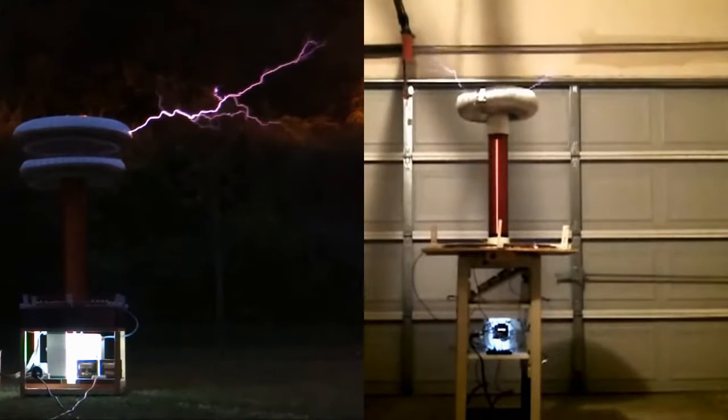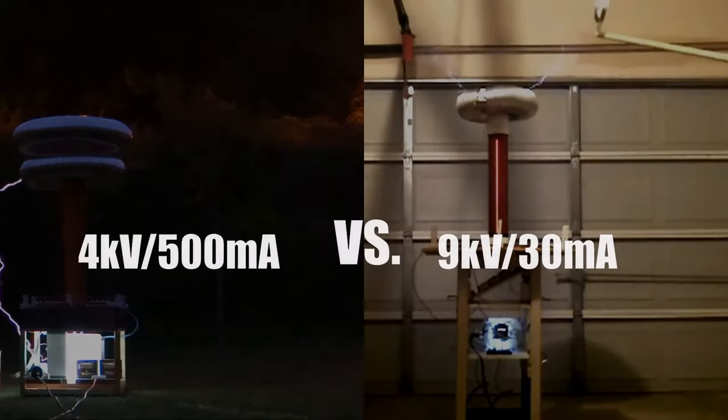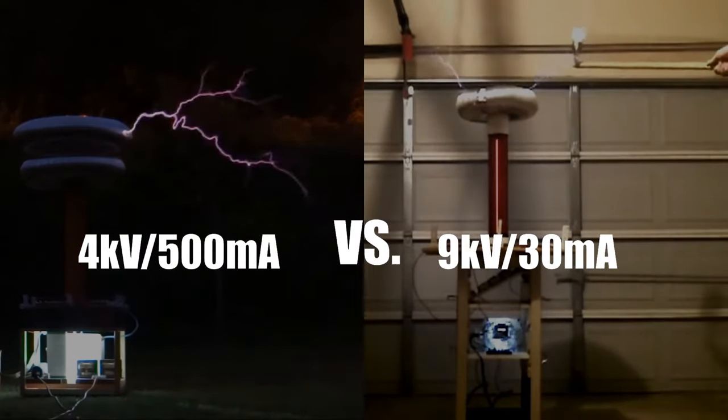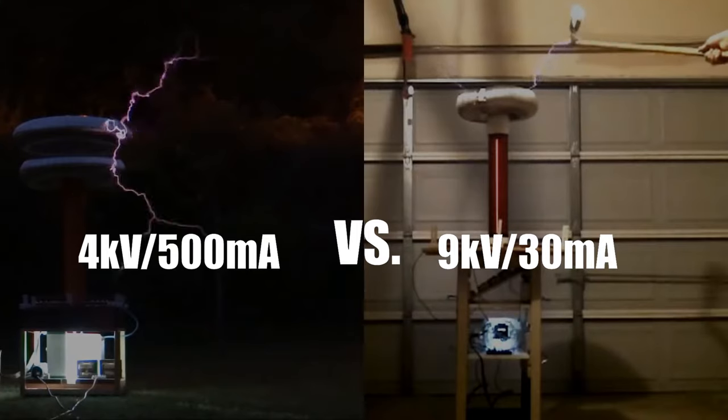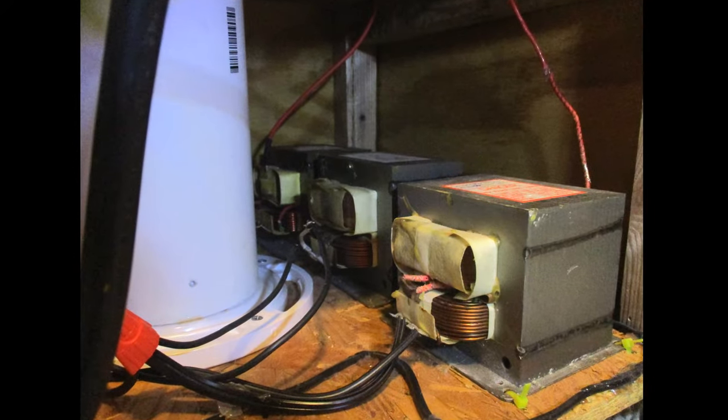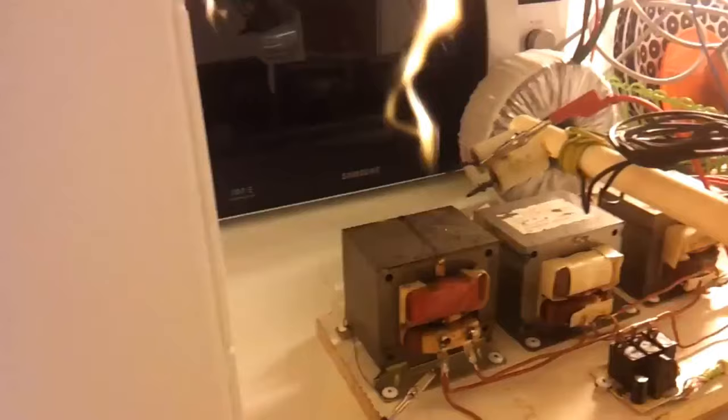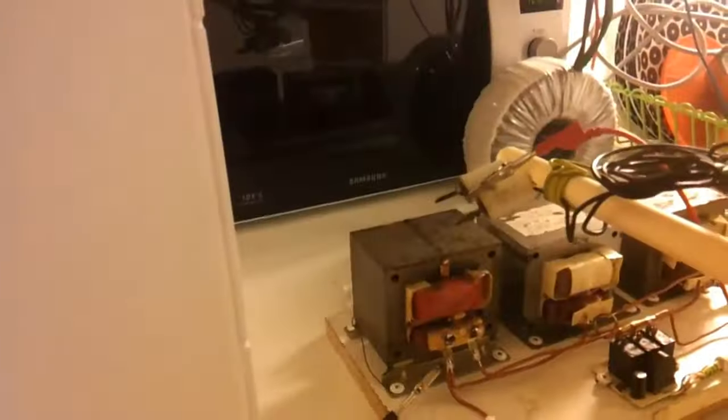If you have a choice between higher voltage or higher current, it's actually better to go with higher current since it optimizes the power use and consumption. For my coil, I used three 2000 volt microwave oven transformers with the outputs in series to get 6000 volts.